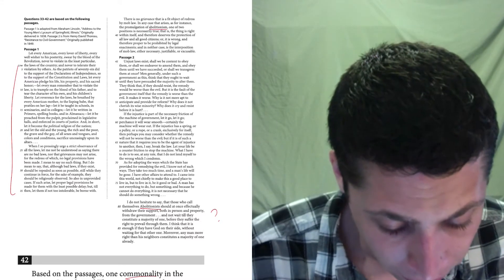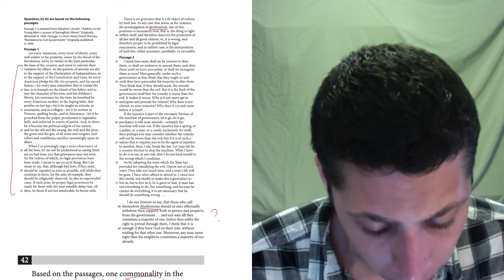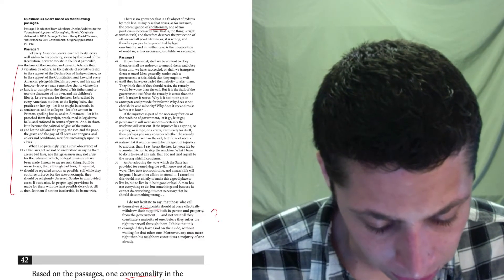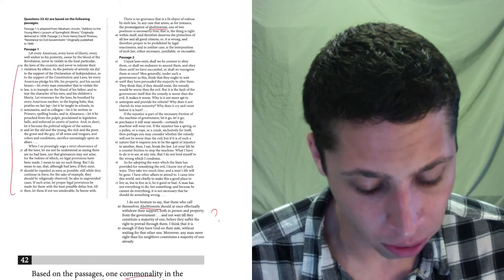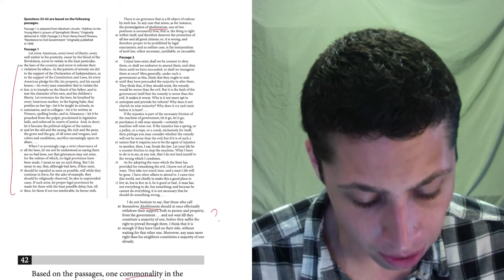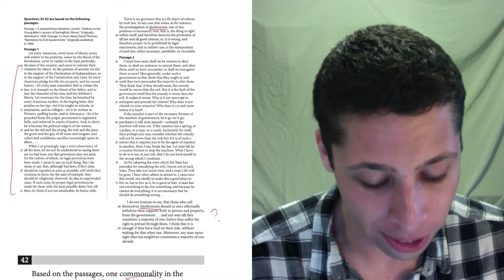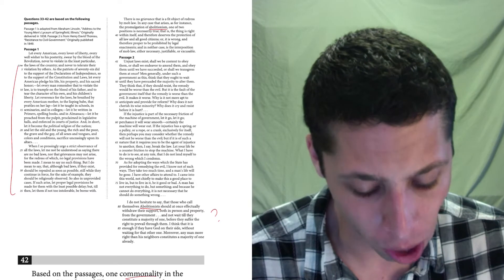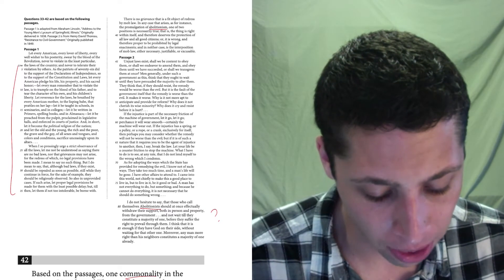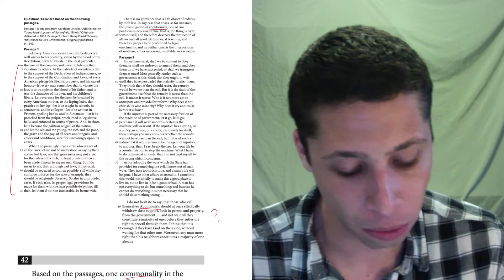There is no grievance that is a fit object of redress by mob law in any case that arises as for instance, the promulgation of abolitionism, one of two positions is necessarily true. That is, the thing is right within itself and therefore deserves the protection of all law and all good citizens, or it is wrong and therefore proper to be prohibited by legal enactments. And in neither case is the interposition of mob law either necessary, justifiable, or excusable.